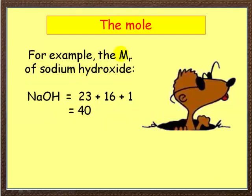For example, the relative formula mass of sodium hydroxide, let's work it out from the periodic table. Sodium has got atomic mass 23, oxygen is 16, hydrogen is 1. Where do these figures come from? Your periodic table. Add them together it's 40.